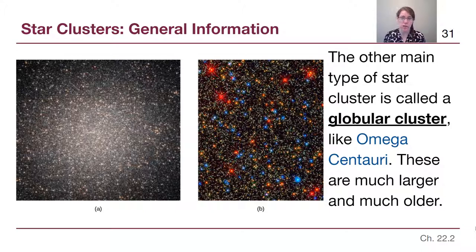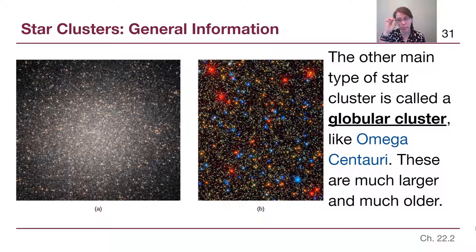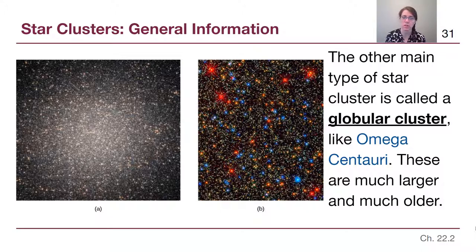The other main type of star cluster is called a globular cluster. These are much, much larger and they are much older. The reason we can say they are older is because when we look at the types of stars in them, there are no high-mass stars still on the main sequence — those high-mass stars have already gone through their entire lives and died. This particular cluster is called Omega Centauri. A supplementary video shows what happens if we zoom in on a patch of this very high-mass globular cluster and sort the stars by apparent color and brightness — we end up with a Hertzsprung-Russell diagram.